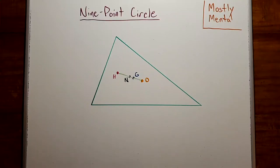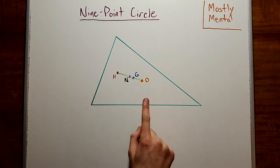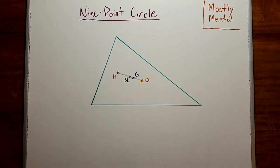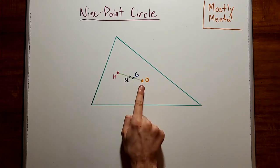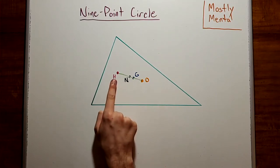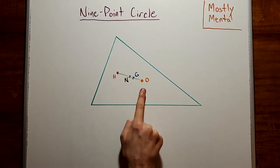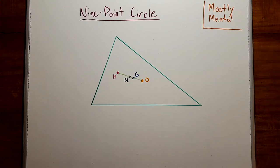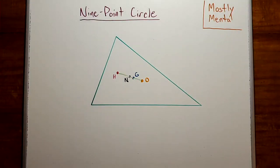As a parting thought, the four centers we've discussed today all lie on a line known as the Euler line. In fact, the centroid will be a third of the way from the circumcenter to the orthocenter, and the nine-point center will be at their midpoint. I'll leave that proof as an exercise for you. Thank you for watching — I hope to see you again soon.